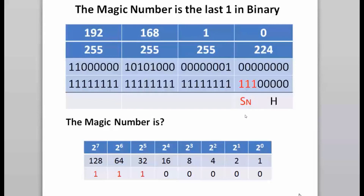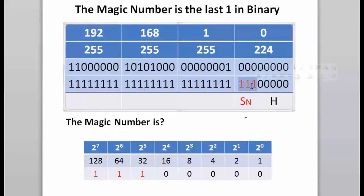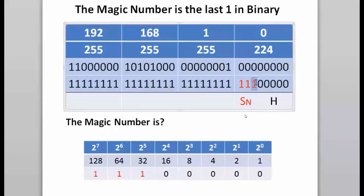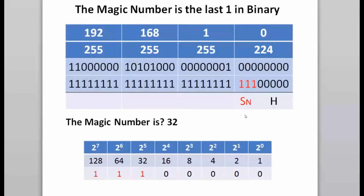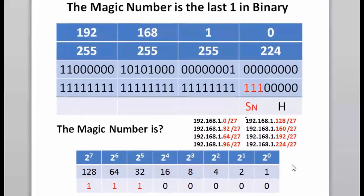With three bits borrowed, we have a slash 27 subnet mask — 255.255.255.224 in decimal. The last one in the subnet mask is in the 32's place, so the magic number is 32. The networks go up by 32: the first being 192.168.1.0 slash 27, then the 32 subnet, 64, 96, 128, 160, 192, and 224. The subnets go up in increments of 32, following the magic number.